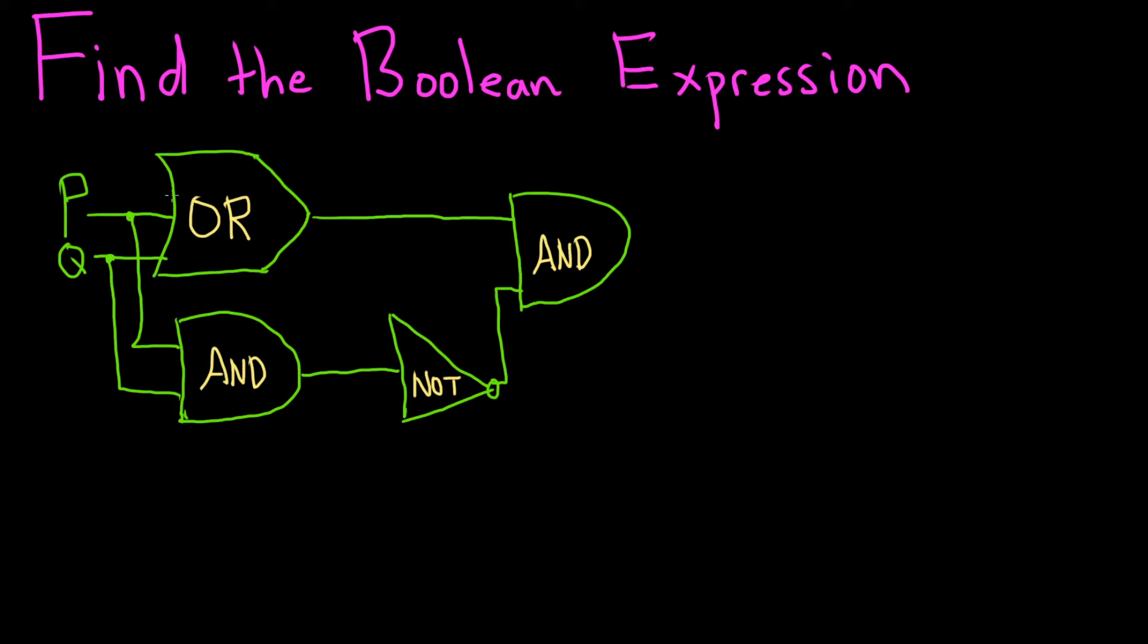So first let's focus on this OR gate here. So we have P and Q both entering the OR gate. That's going to result in P OR Q.